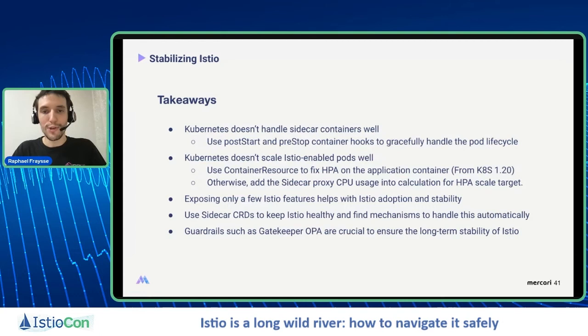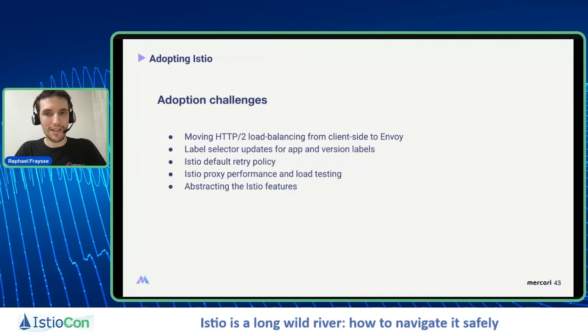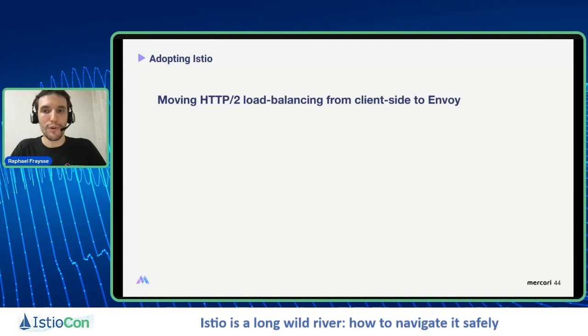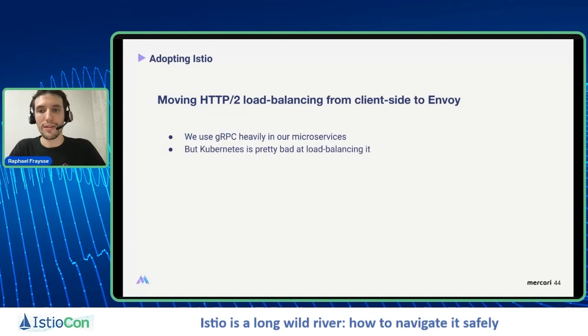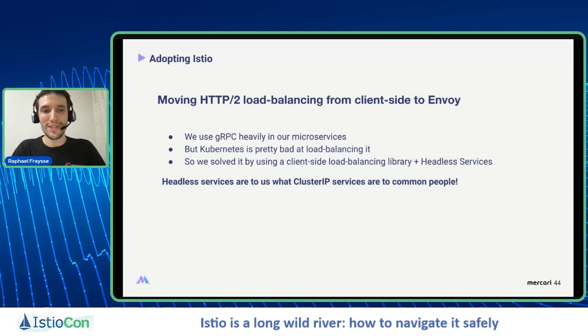Now that we've stabilized Istio, let's move on to the adoption part, which is equally important. The first adoption challenge is our move from client-side HTTP/2 load balancing to Envoy. At Mercari, we use gRPC quite extensively in our services, but Kubernetes is pretty bad at load balancing it. We solved it with client-side load balancing coupled with headless services — to us, headless services are what cluster IP services are to common people.